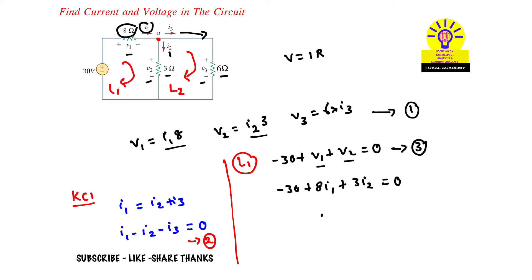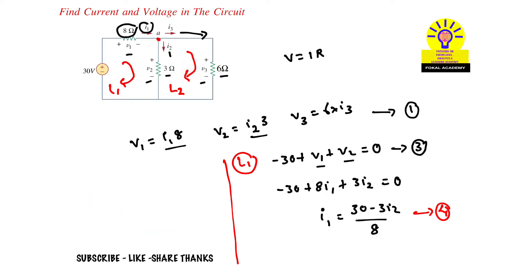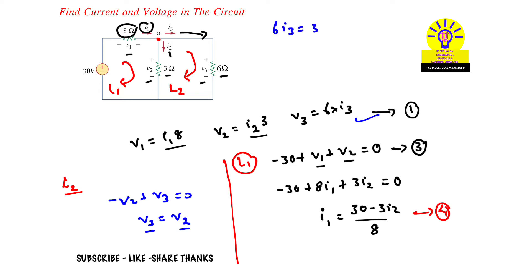By simplifying, we get i1 = (30 − 3i2) / 8. Let's consider this as Equation 4. Now apply KVL for Loop 2: −V2 + V3 = 0, so V3 = V2. Substituting V2 = 3i2 and V3 = 6i3 from Equation 1, we get 6i3 = 3i2, so i3 = i2 / 2. Let's consider this as Equation 5.